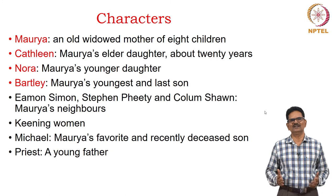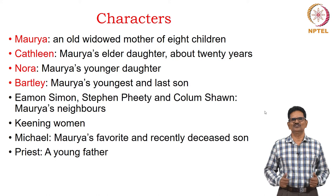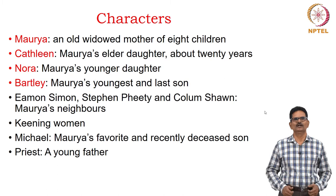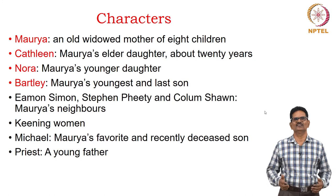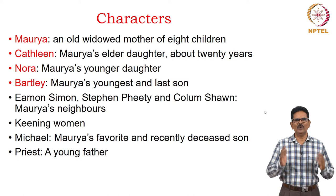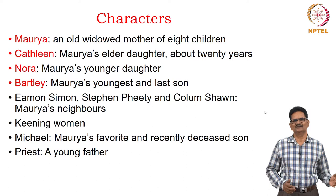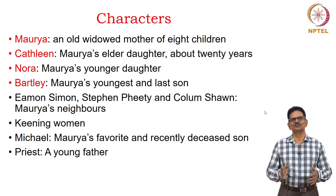Here are the characters. Maurya is an old widowed mother of eight children. Kathleen is Maurya's elder daughter who is about twenty years old. Nora is the younger daughter of Maurya. The only son we see on stage is Maurya's youngest and last son Bartley. We also have neighbors like Eamon Simon, Stephen Feety and Colum Sean. We have some keening women whose names are not given. Michael is the favorite son of Maurya but he has recently died at sea. We also have a young priest who has some role to play in the life of the Aran Islanders.